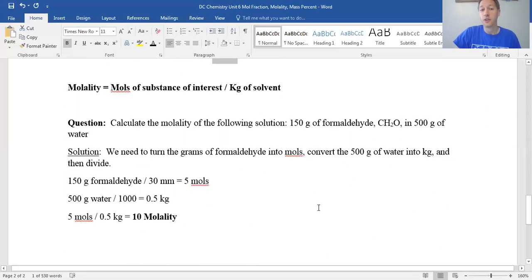And the lesser known formula, molality. Molality, again, is moles divided by kilograms of solvent. Not to be confused with molarity, because molarity is moles per liter. Molality is moles per kilogram of solvent. This is the only one here that doesn't go by everything, too. Like on the mass percent, everything's like total mass on the bottom. For the mole fraction, all the moles are on the bottom. Here it's just actually the solvent. Calculate the molality. We have 150 grams of formaldehyde and 500 grams of water.